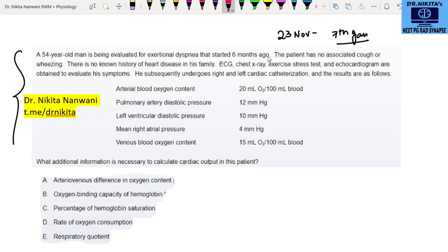Now as I always say in lengthy questions, always start reading from the last line so that you know what the question is trying to ask. So the last line here says what additional information is necessary to calculate cardiac output in this patient.